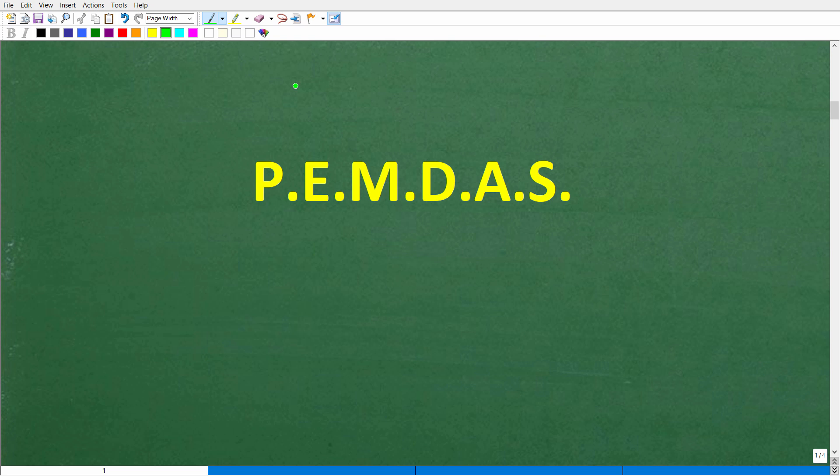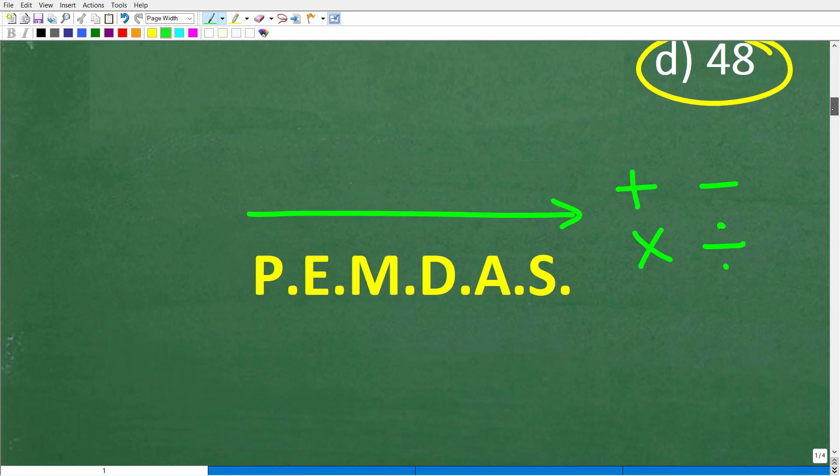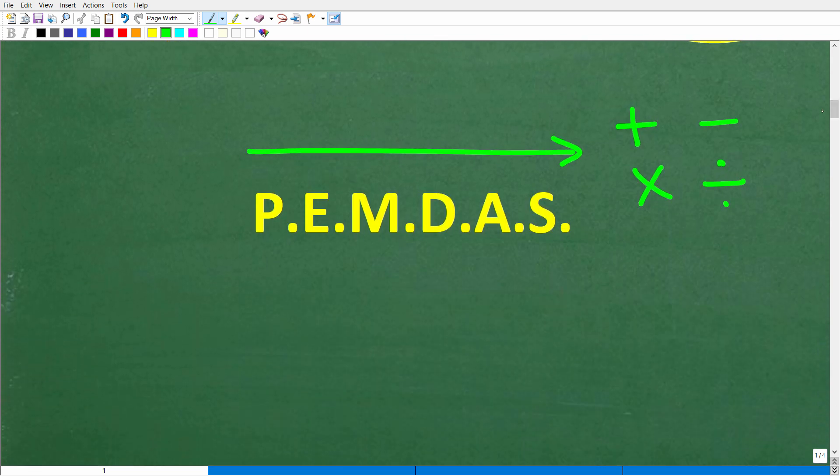So we need to review something called the order of operations. And that means we need to review this lovely acronym right here. Okay, so this is called PEMDAS. Pretty much everyone that's ever studied mathematics has learned something like this. Now, PEMDAS is a checklist. It goes from left to right, and it tells us the correct order to do a math problem in terms of the operations.